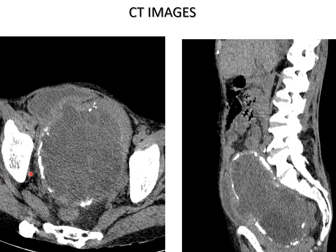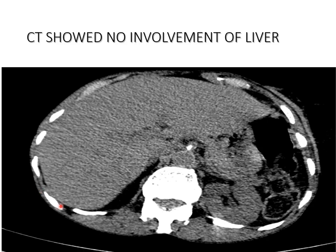Axial and sagittal plane CT images showing a solid cystic lesion with peripheral calcification and fistulous connection. Axial CT scan confirmed no involvement of the liver.